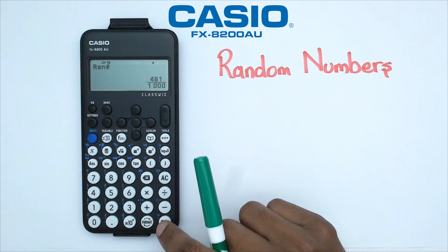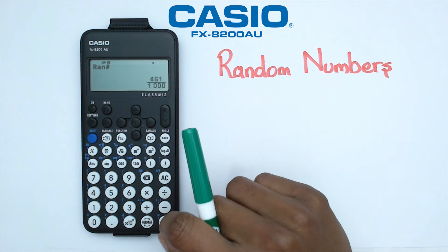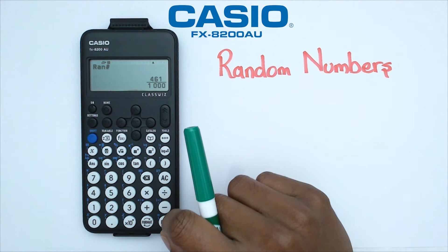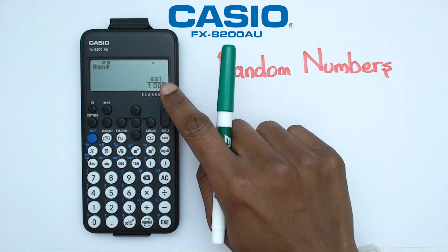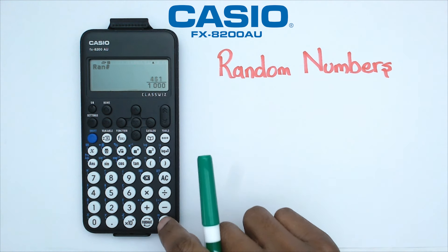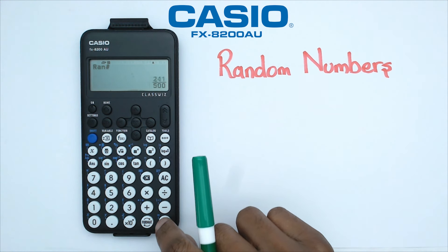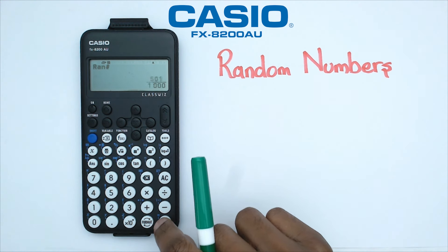If you press EXE again you're going to start getting random numbers. Random numbers are generally three-digit numbers, but as you can see this is written as a fraction. If I keep going, all of my numbers are coming as fractions.